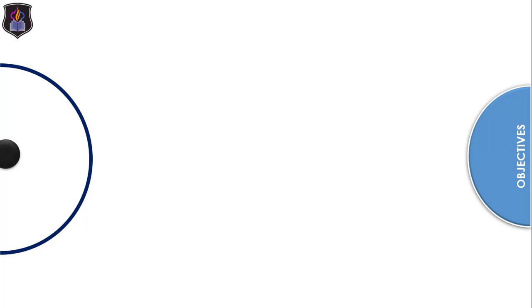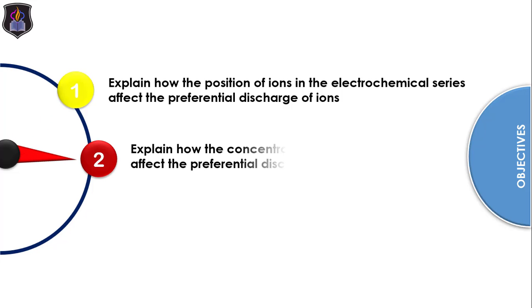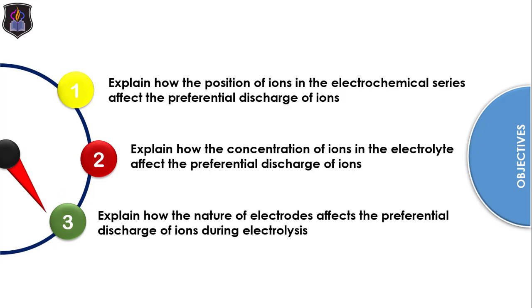At the end of this lesson, you should be able to explain how the relative position of ions in the electrochemical series, concentration of ions in the electrolyte, and the nature of electrodes affect the preferential discharge of ions during electrolysis.